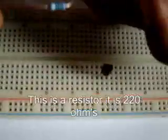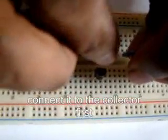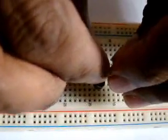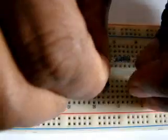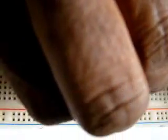This is a resistor. It is 220W. Connect to the collector first, and the other end we connect to another point.